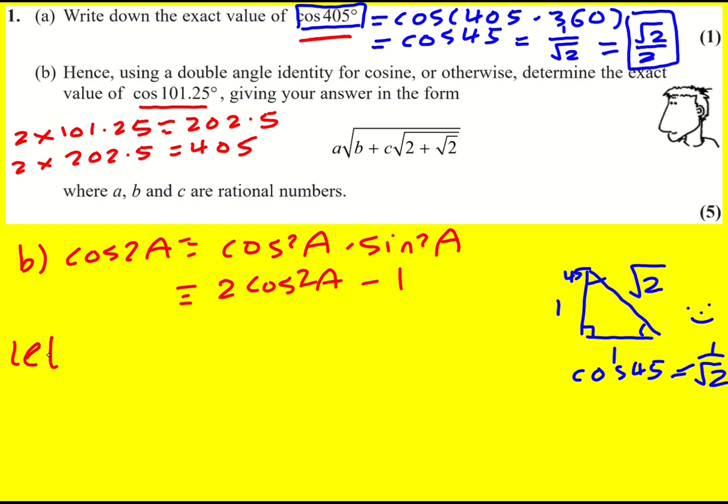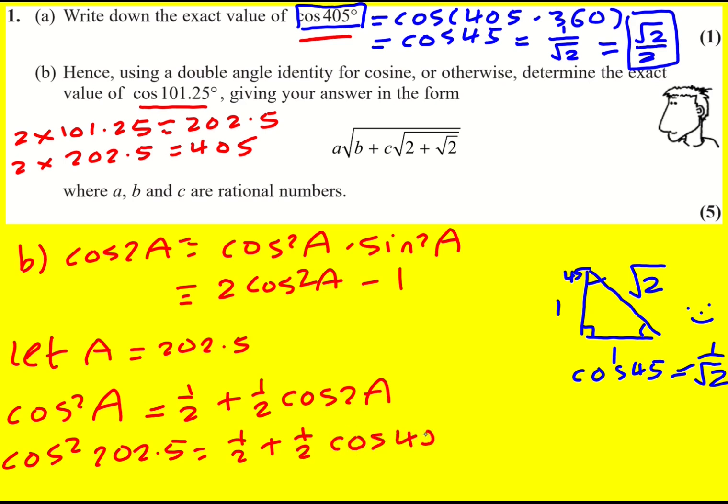What I can do is let A equal 202.5° first, because then I can get it involved over here. I want to make cos² A the subject, and then I'll be able to find cos 202.5°. So cos² A, if I add 1 then divide by 2, I'll get a half plus a half cos 2A. So cos² 202.5° will equal a half plus a half cos 405°.